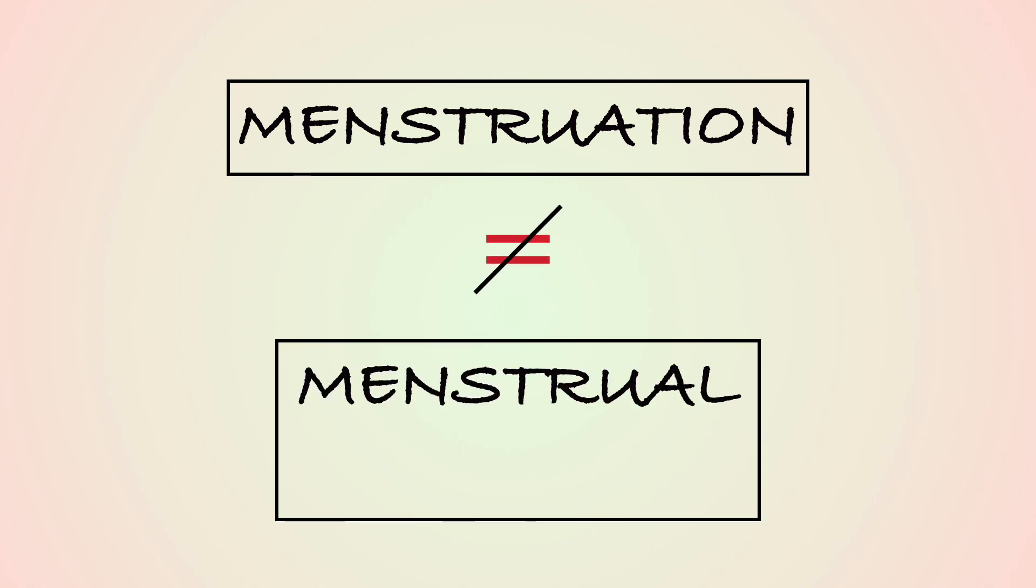Menstruation and menstrual cycle are often thought to be synonyms, but note that menstruation is just the first phase of the uterine cycle and lasts for 3 to 7 days.